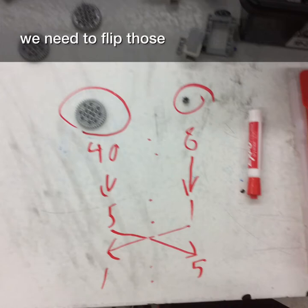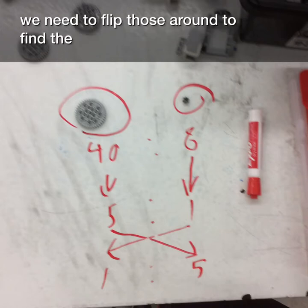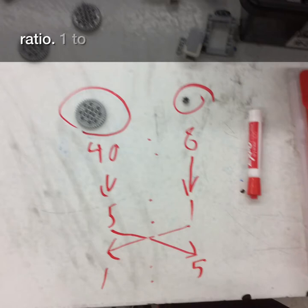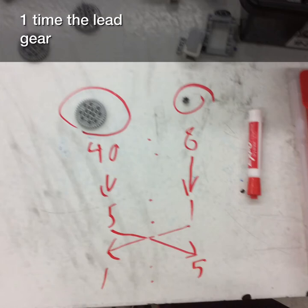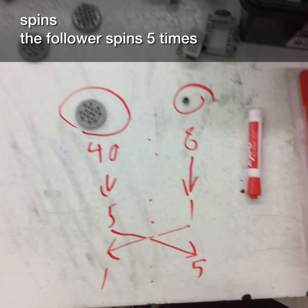So then we have to switch it around. So the lead gear has 1 and the follower gear has 5. So the lead gear is the 42-tooth, and the follower is the 8-tooth. Because when the lead gear turns 1, the follower gear turns 5 times in that amount of time.